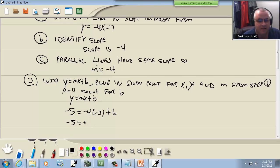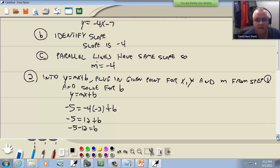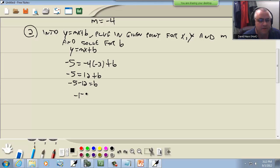Negative 4 times negative 3 is 12. Take the 12 over to the left side, becomes a negative 12, which gives us negative 17.